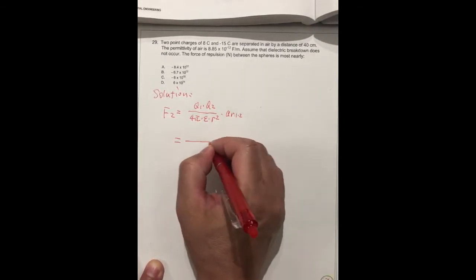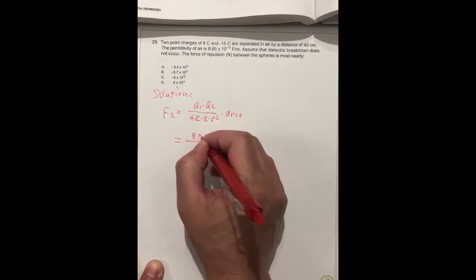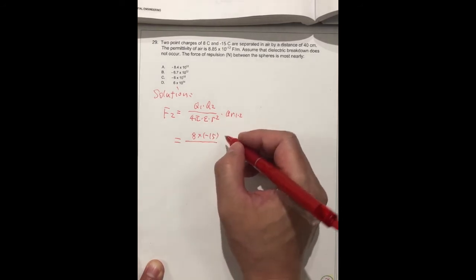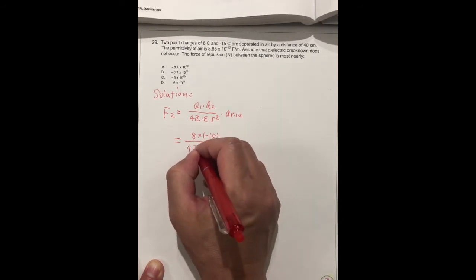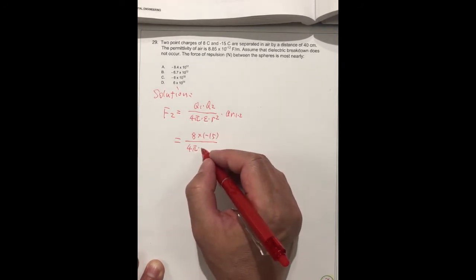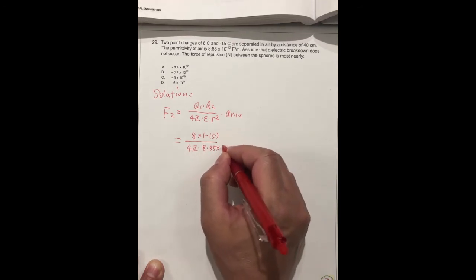We get Q1 is 8 coulombs times Q2 which is minus 15 coulombs. And 4 pi epsilon, the permittivity of air, is 8.85 times 10 to the minus 12.